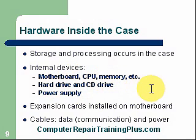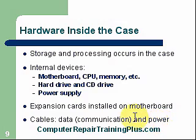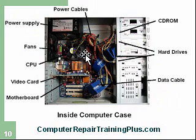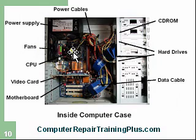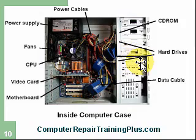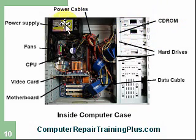Expansion cards are installed on the motherboard — these are cards we can plug into different slots on the motherboard. We also have data cables for communication and power cables to supply power to all devices. Here's an example of the inside of a case — this is actually my computer. We have the power supply up top with power cables supplying devices and the motherboard. There are fans on the back and on top of the CPU, which needs a lot of cooling as it gets very hot. There's a video card plugged into an AGP slot, the motherboard itself as a large circuit board, an IDE data cable, and a hard drive. You can also have another hard drive and a CD-DVD device. These are the basic components inside the computer and we will be taking each one in detail.